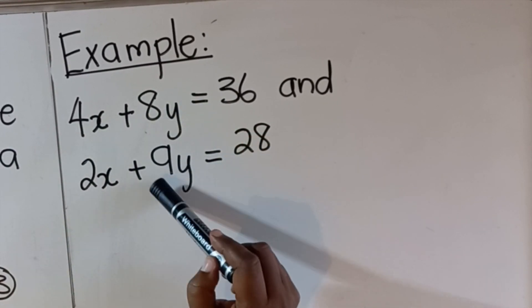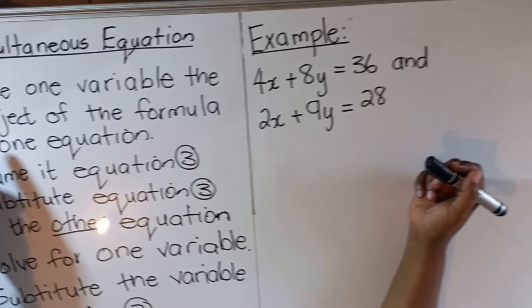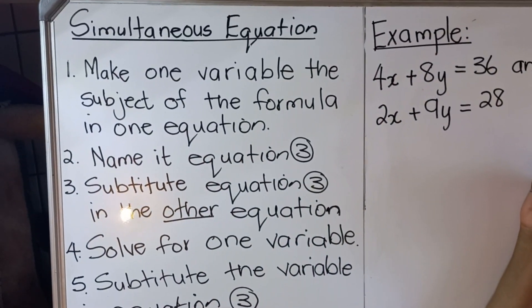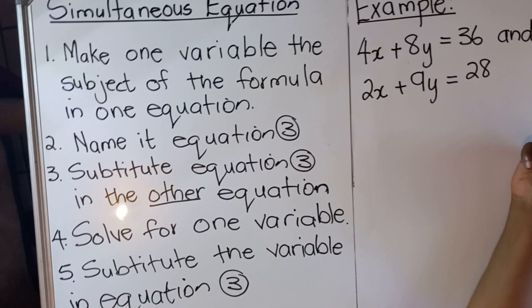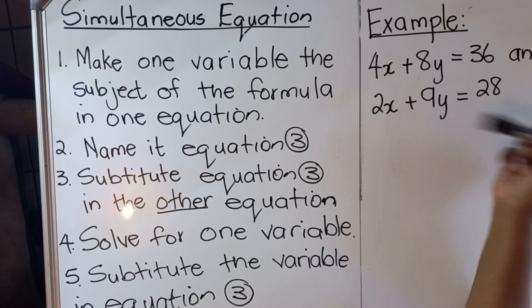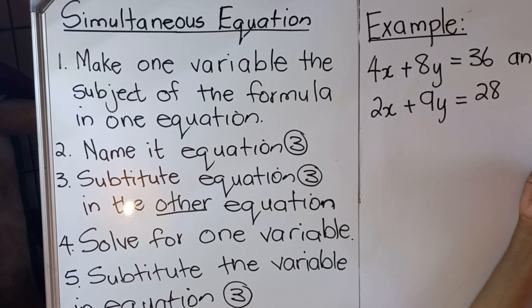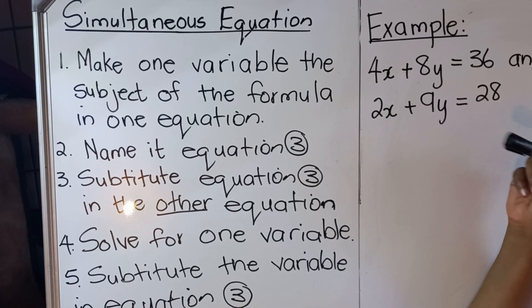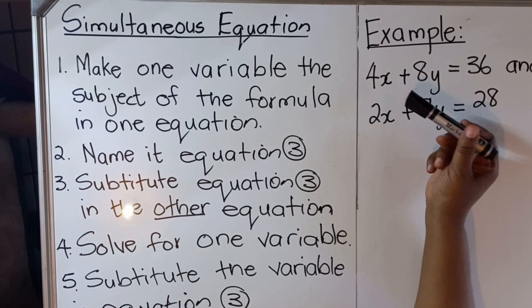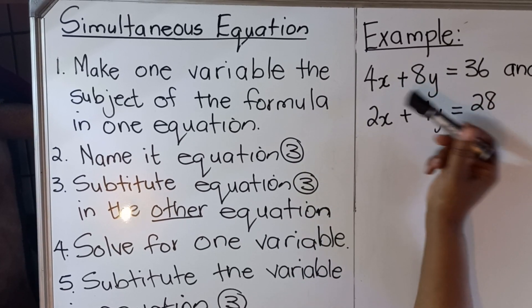You can't solve it with one equation; you need two equations. The first thing you do is make one variable the subject of the formula in one equation. So in these two equations, you choose any that will work for you and make one variable - either x or y - whichever will be easier.